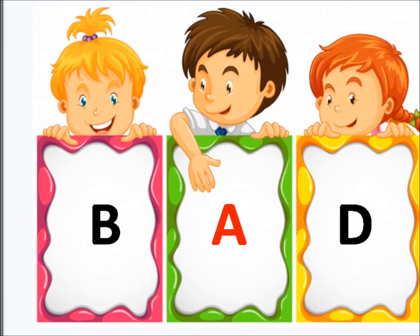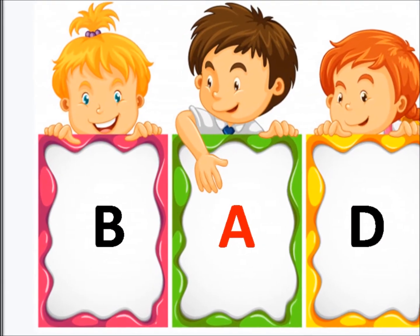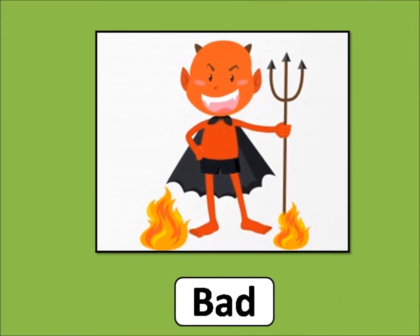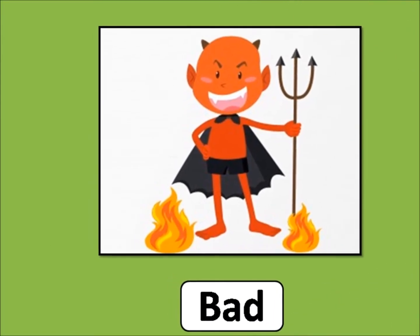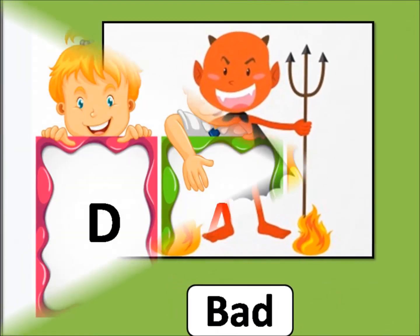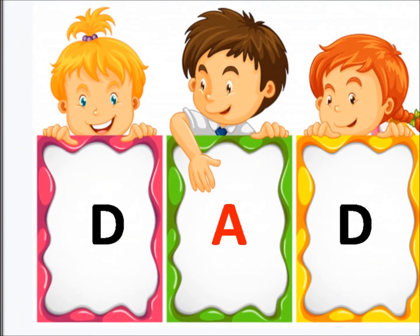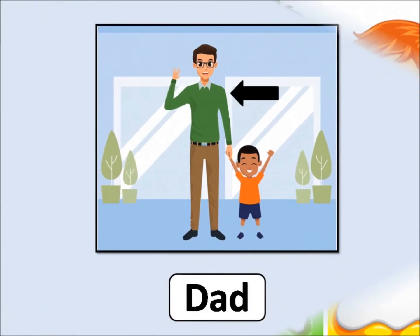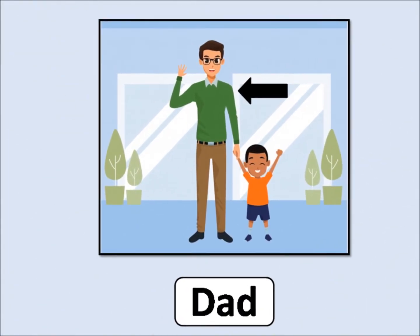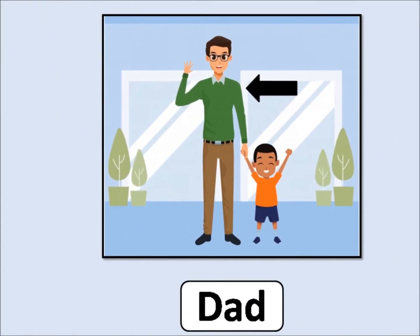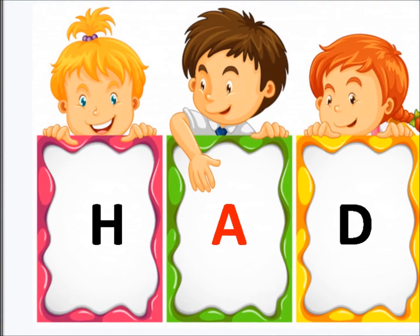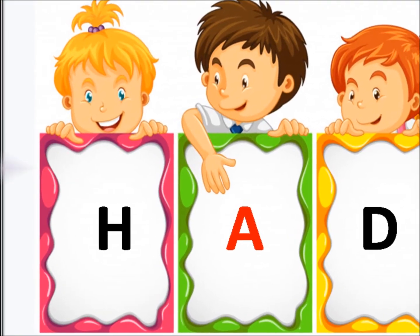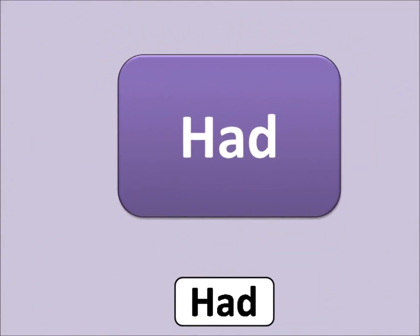B, A, D — B, Ad — Bad. D, A, D — D, Ad — Dad. H, A, D — H, Ad — Had.